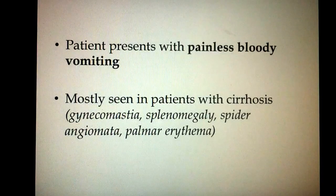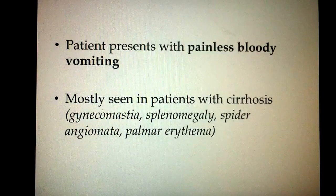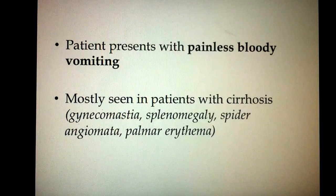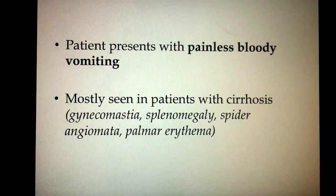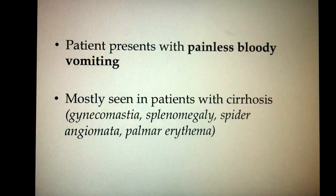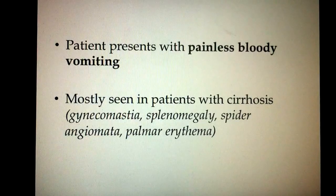First of all, look for the presentation. The patient usually presents with painless and bloody vomiting. It is usually seen in patients with cirrhosis. USMLE Step 3 will not tell you that this patient has cirrhosis — they will give you the physical description of a patient. So look for physical findings such as splenomegaly, spider angiomata, and palmar erythema.